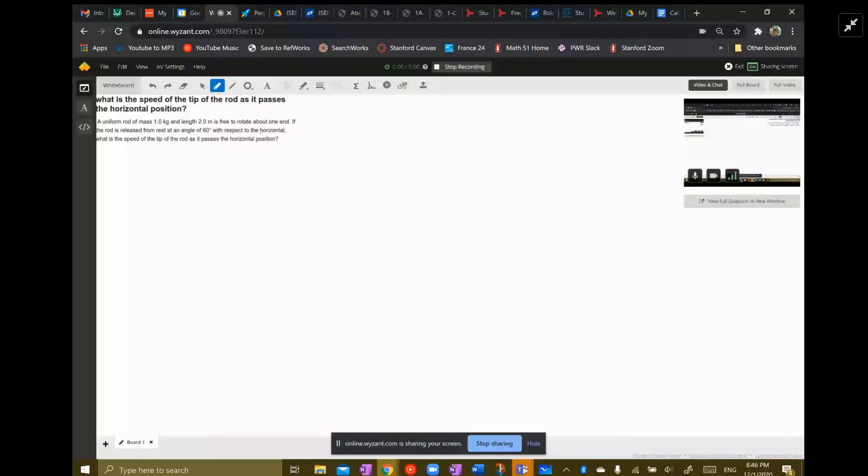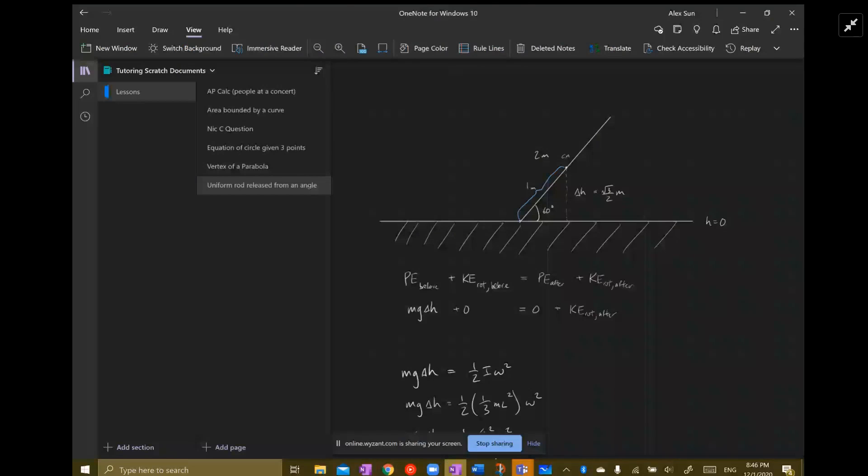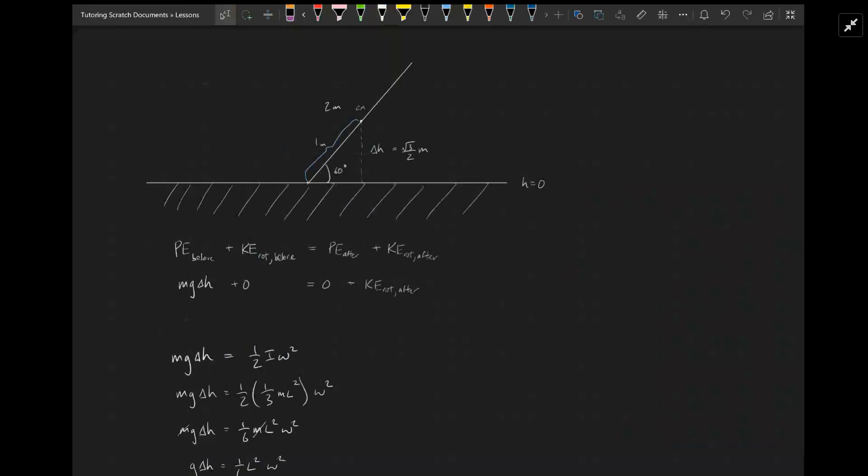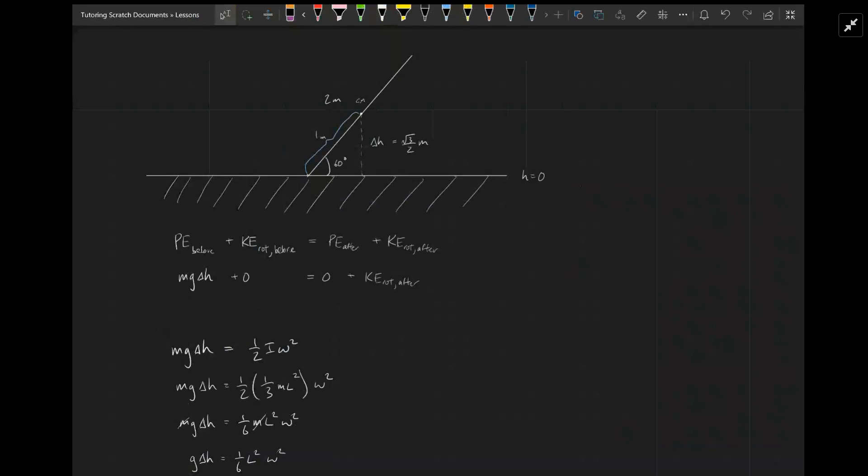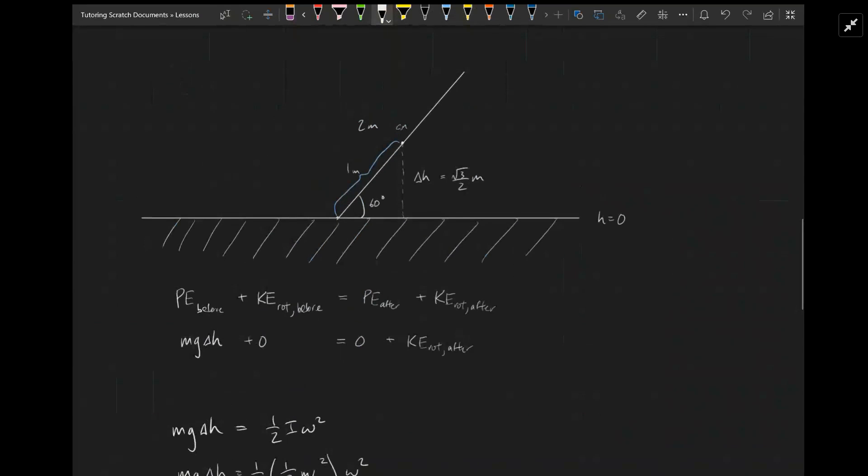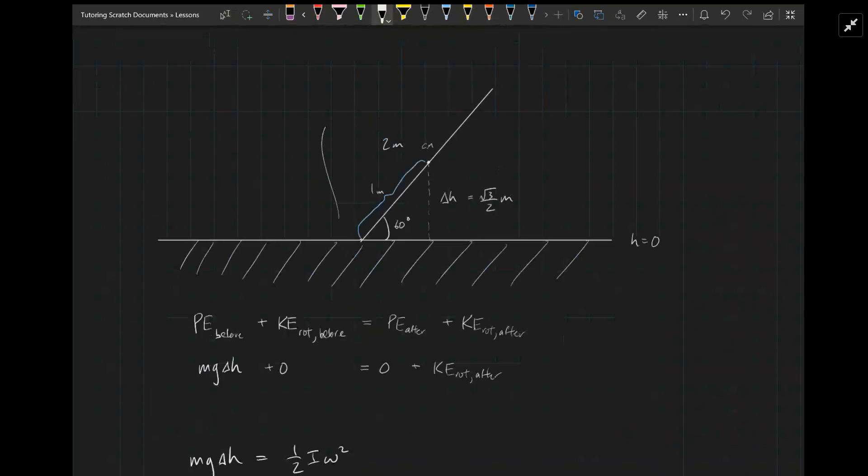For this problem, we're going to be using conservation of energy, specifically potential energy and rotational kinetic energy. I've drawn a little picture of the situation here. We have the rod, this long thing, up at an angle of 60 degrees. We're just going to let it go and let it fall.